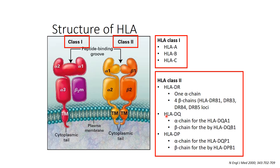For HLA-DQ and HLA-DP, we do typing for both the alpha chain and the beta chain, because in both cases the alpha and beta chains are polymorphic and clinically significant. Thank you, and we'll see you again in another short video.